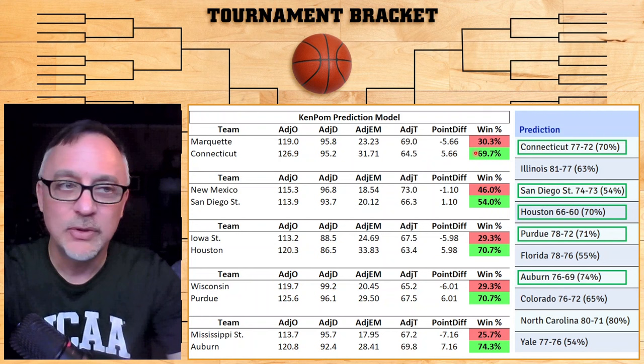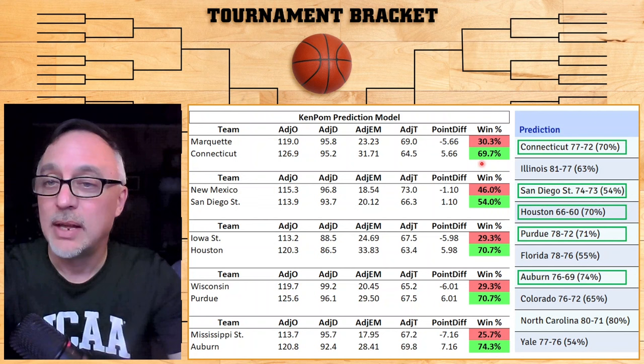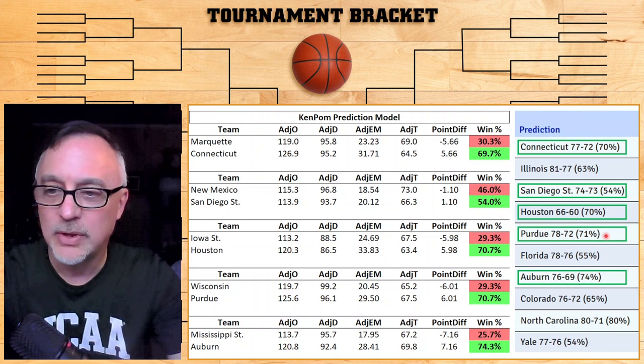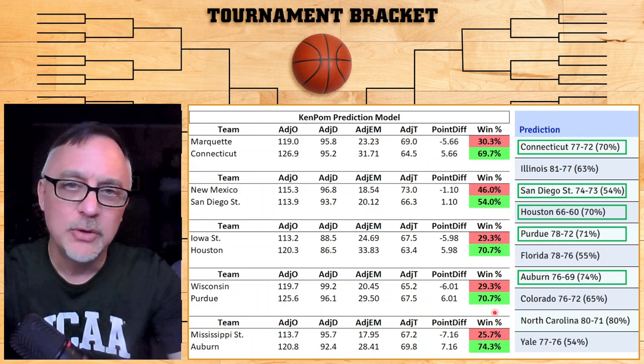According to the Ken Pom website, that's a 70% win probability, which is very close to what our formula gives. San Diego State has a 54% probability of winning — same over on the Ken Pom site. 70.7% for Houston, and pretty much the same over here as well. 70.7% for Purdue, which rounds up to 71%, but they just lost to Wisconsin. And then 74.3% for Auburn, which matches 74% on the Ken Pom site. So I feel really confident that the formula I'm using in this spreadsheet is the correct one.